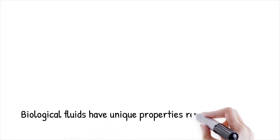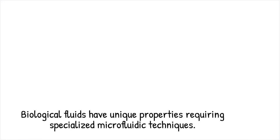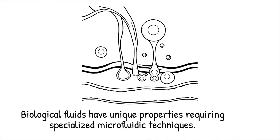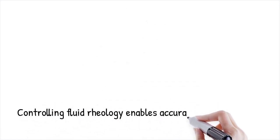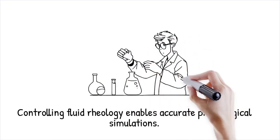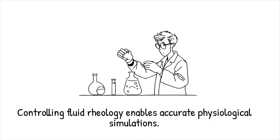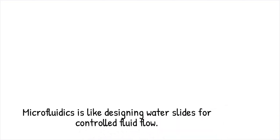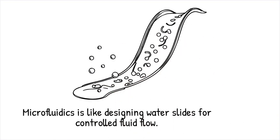Many biological fluids, such as blood, mucus, and synovial fluids, exhibit non-Newtonian properties, necessitating specialized microfluidic techniques for accurate handling and diagnostics. Shear thinning and viscoelastic properties influence how these fluids behave in microchannels, affecting cell sorting, bioassays, and organ-on-a-chip models. Controlling their complex rheology allows for more accurate simulations of physiological environments and disease states. Microfluidic blood separation devices rely on the shear thinning nature of blood to enable efficient plasma extraction without damaging red blood cells. Handling biological fluids in microfluidics is like designing water slides — flow dynamics must be optimized to ensure a smooth and controlled ride for different sized particles or cells.